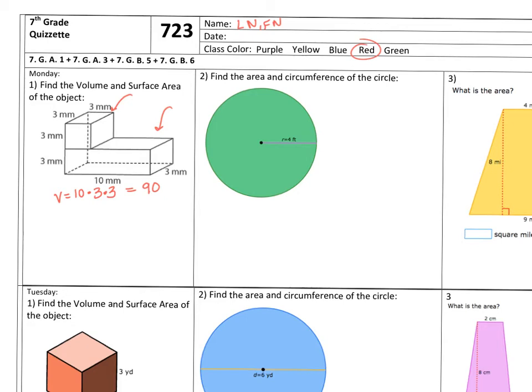So the volume of the rectangular base is 90. Now the volume of the cube, which is on top, is also 3 times 3 times 3, and that's going to be 27. So the total volume is 90 plus 27, which is 117. So the three-dimensional object is, the volume is 117.